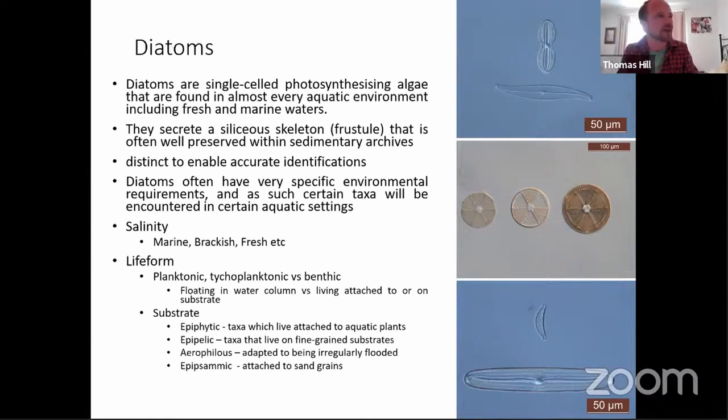The great benefit of diatoms is that they have very specific environmental requirements, which mean that certain taxa will be encountered in certain aquatic settings, whether that be fresh, brackish or marine. If we looked at salinity as an example, we can go into more detail. We can talk about life form as well. Some taxa live floating within the water. These are planktonic taxa. Others live attached to or within the substrates underlying the water, which these are the benthics. And we also get a bizarre group called the tychoplanktonic taxa that sometimes are associated with the benthic realm, but can also be found floating in the water column.